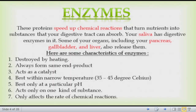There are some characteristics of enzymes. First, they are destroyed by heating — if it is too warm, they will be destroyed. As catalysts, they only affect the rate of chemical reactions and are not consumed. They work best within 35 to 45 degrees Celsius, at a particular pH level, and they act on only one kind of substance.